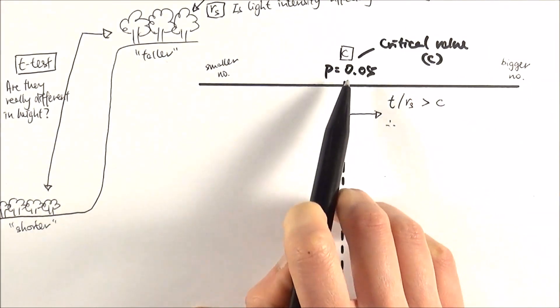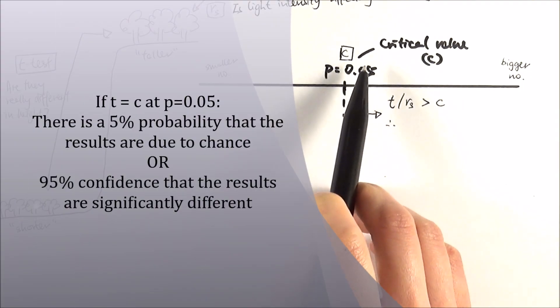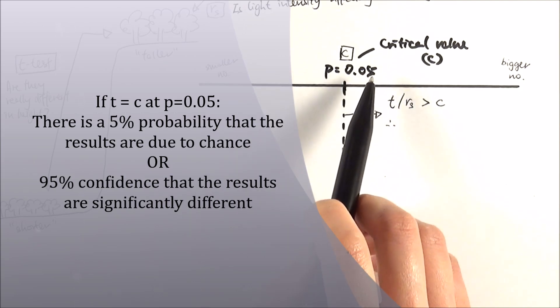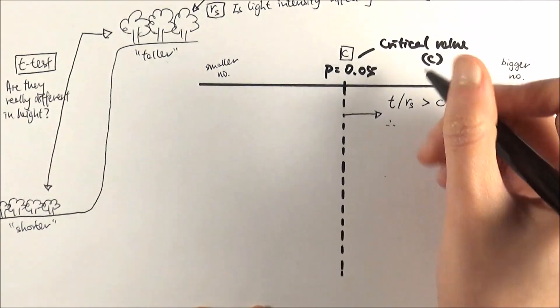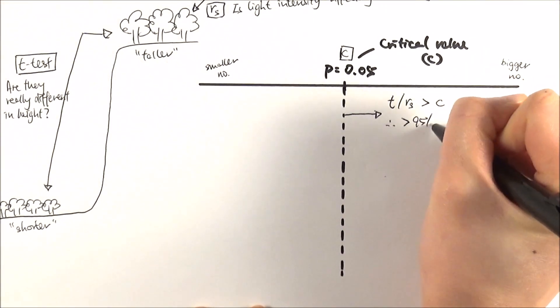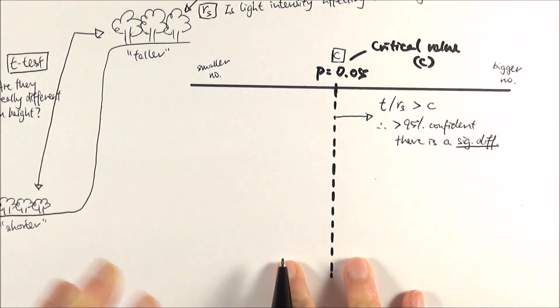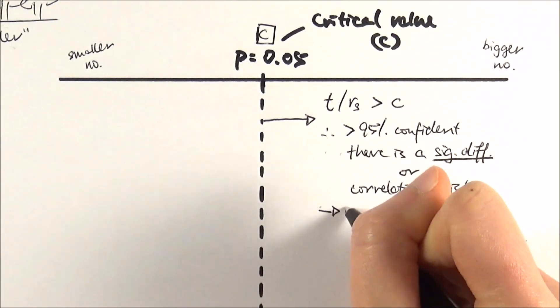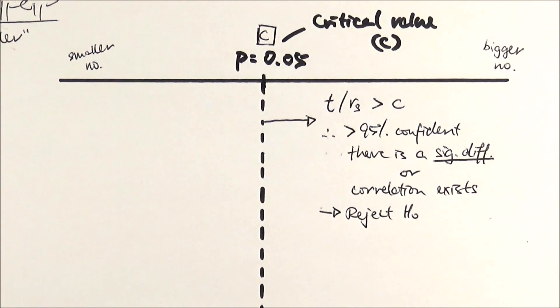In that case, what we're saying is because at this point at p equals 0.05 we say there are five percent probability that our results are due to chance, or a 95 percent confident that there is a significant difference, that something is actually causing it. So if our value is bigger than the critical value, we say that we are more than 95 percent confident there is a significant difference, and I'm going to underline that to make sure you do include this word, or that a correlation exists. In that case, what we will do is we will reject the null hypothesis. We're basically saying this is exciting, something we know that something is causing an effect, and then we can do further study on that.